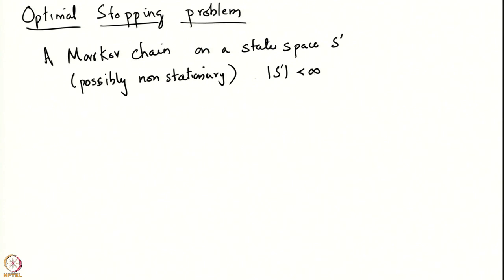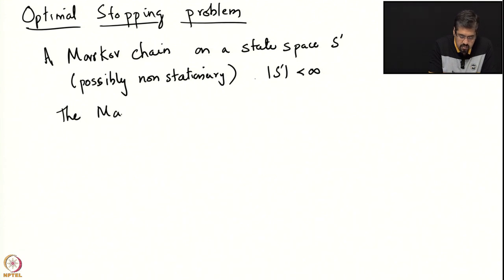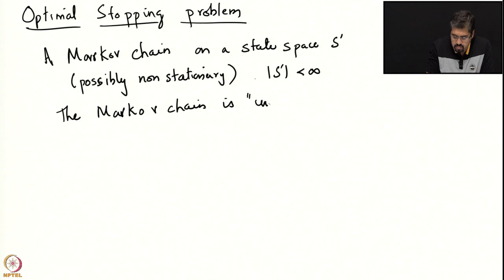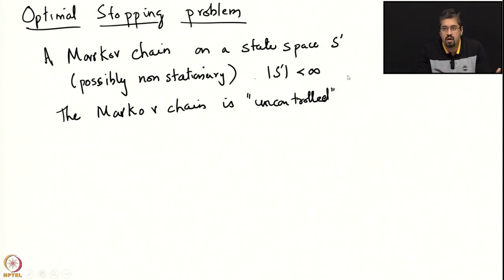This Markov chain is autonomous in the sense that it is uncontrolled. That is why I said it evolves in the background — it is uncontrolled. Left to itself, it will evolve based on its own transition probability. The problem for us is to decide when to intervene in this Markov chain.